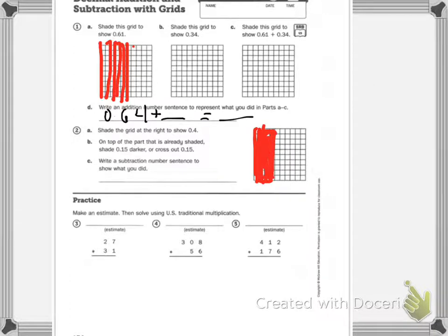You now need to cross out or color in darker 15 hundredths and then write a subtraction problem. So four tenths minus something equals something. What are you subtracting? I'll give you a hint: how many did you cross off?